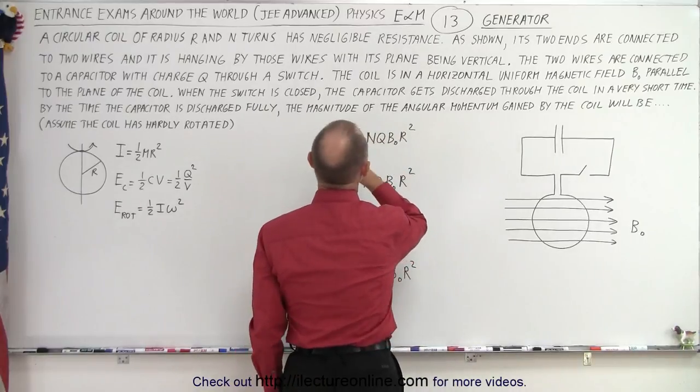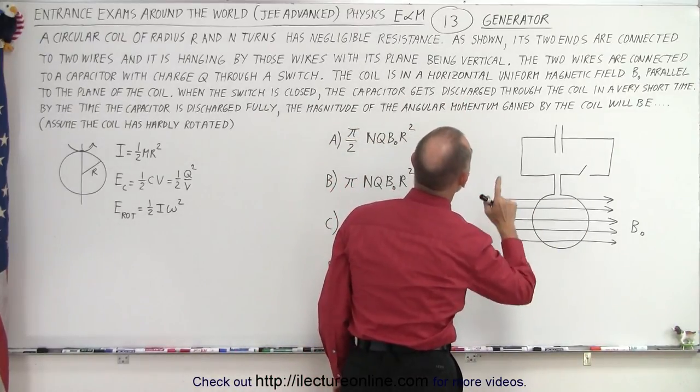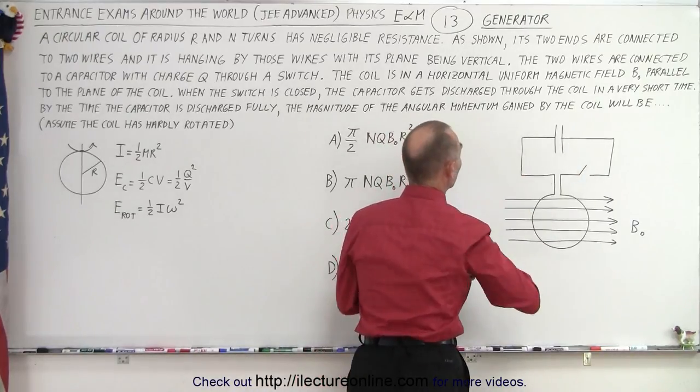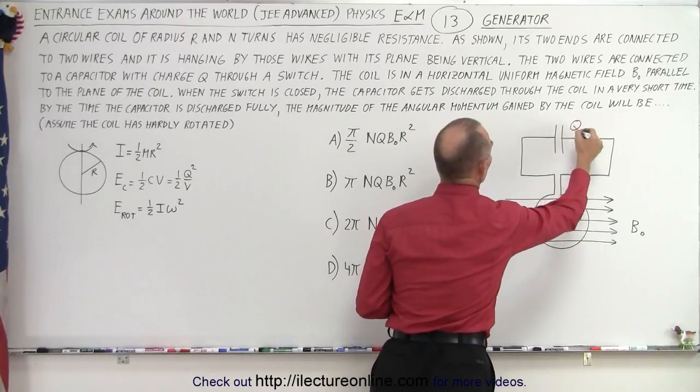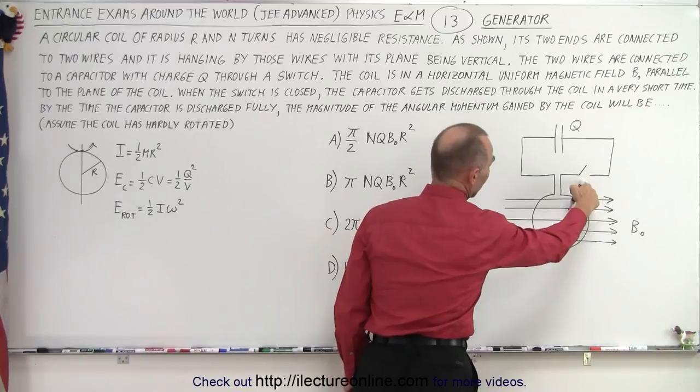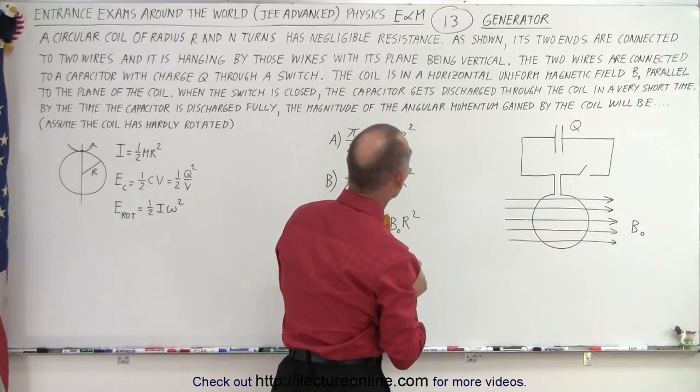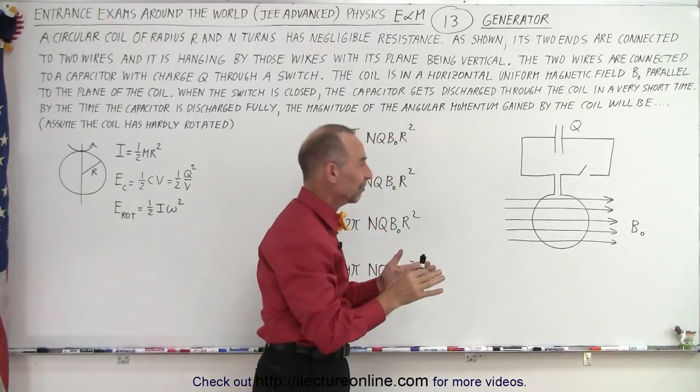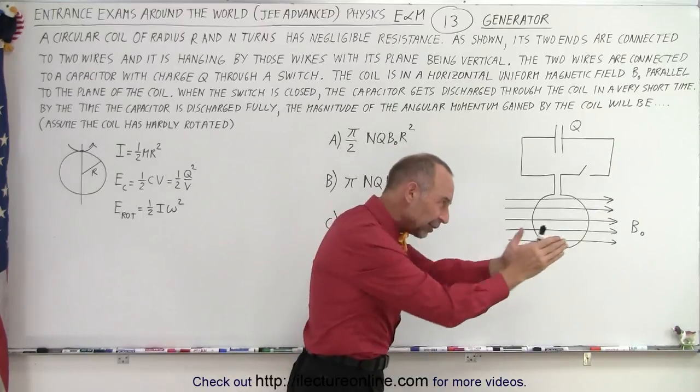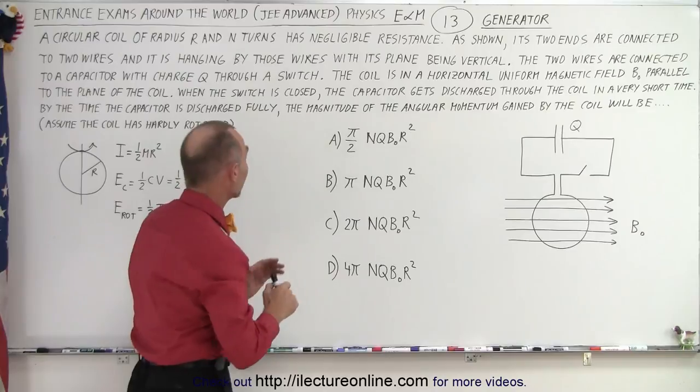With its plane being vertical, the two wires are connected to a capacitor which has a charge Q on it. So it starts out with a charge Q on the capacitor, and it's also connected with a switch. The switch is open, and the coil is in a horizontal uniform magnetic field, so parallel to the plane of the coil.